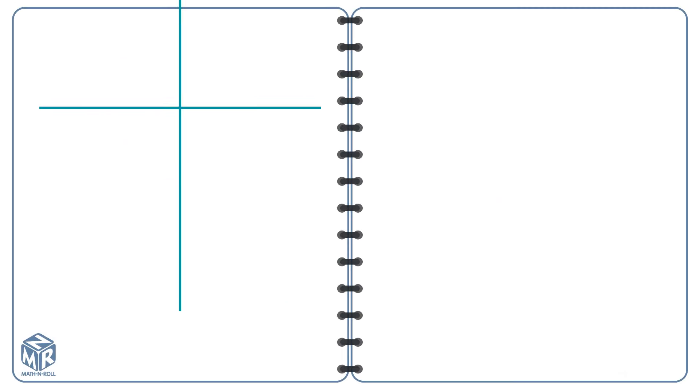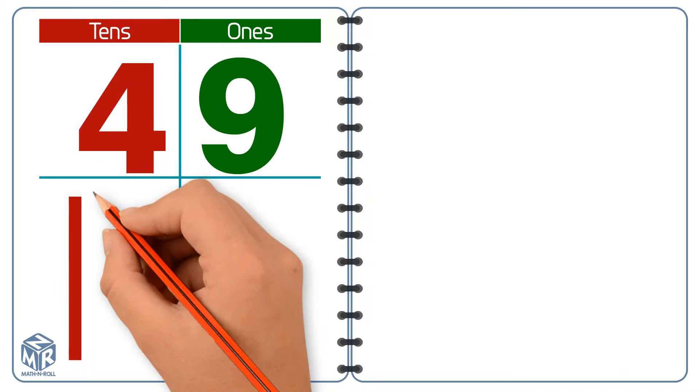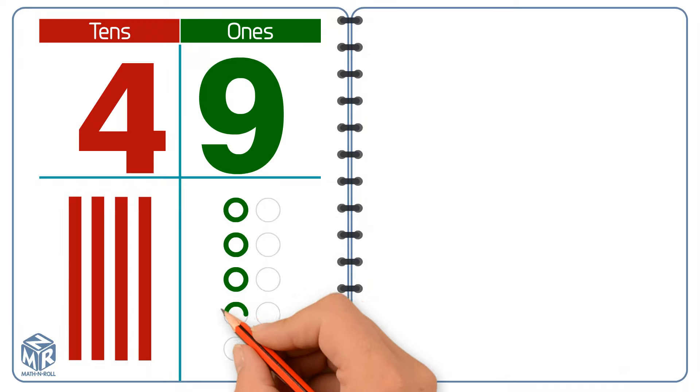Let's try another example using bars and circles. The 4 in 49 means four 10s, or 40. The 9 in 49 means nine 1s. We can write four 10s and nine 1s as 49.